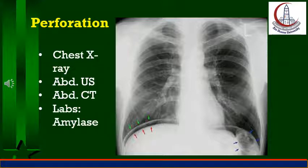Perforation occurs much more commonly with duodenal peptic ulcers than with gastric peptic ulcers because of the thicker wall of the stomach. There is acute severe sudden epigastric pain as if something burst inside the abdomen, followed by partial relief after one to two hours due to peritoneal fluid dilution of the acid spillage. Soon the pain recurs as tearing and cutting all over the abdomen due to septic peritonitis. The full-blown picture of secondary bacterial peritonitis is present, with limited abdominal movement with respiration, board-like rigidity, and intolerance to percussion.